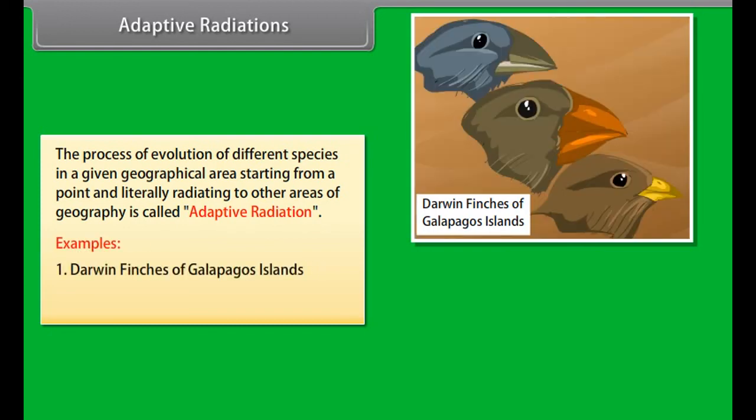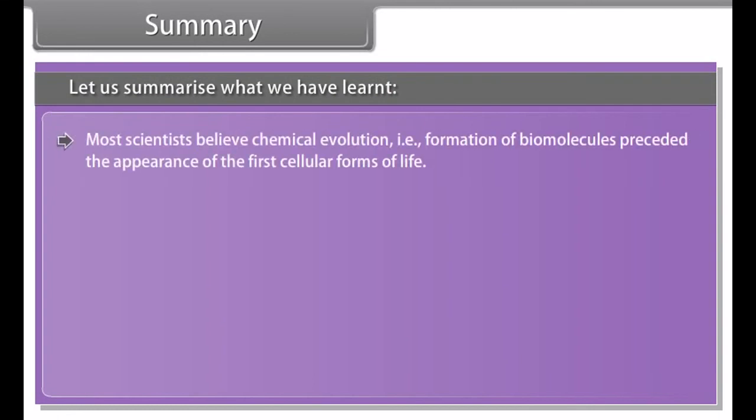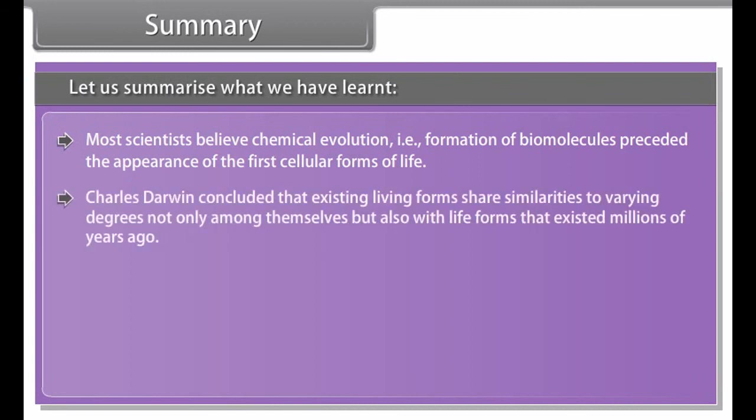When different structures evolve for the same functions, it is termed as convergent evolution. Such structures are anatomically dissimilar though they perform similar functions. These are called analogous structures. Example: wings of butterfly, bird and bat.